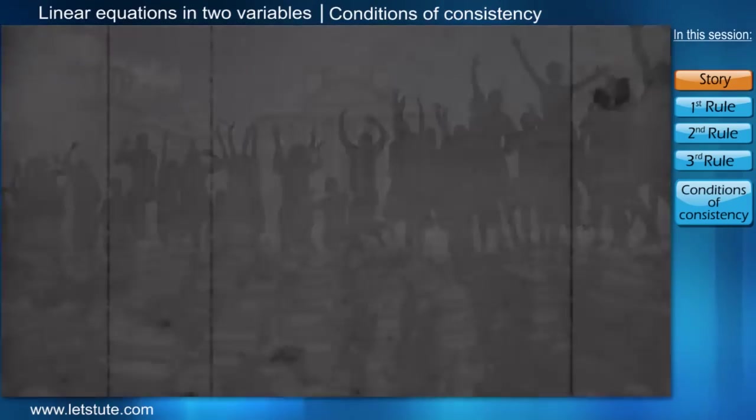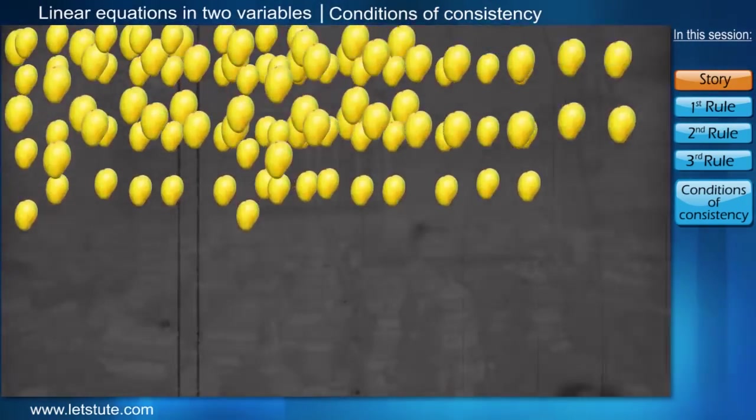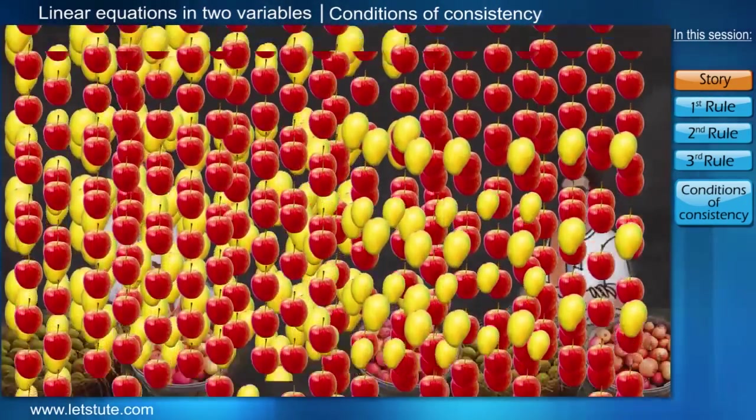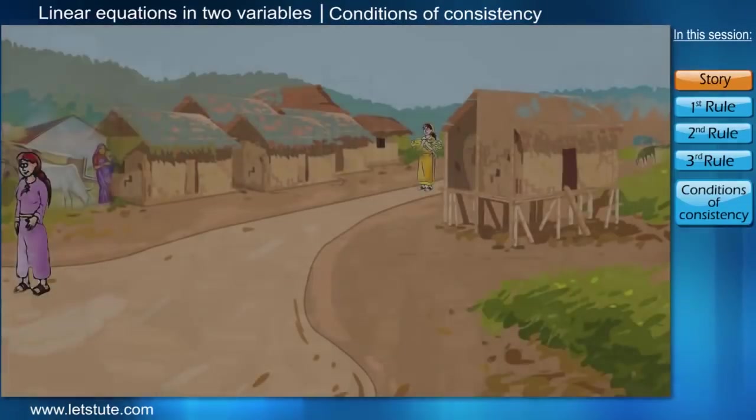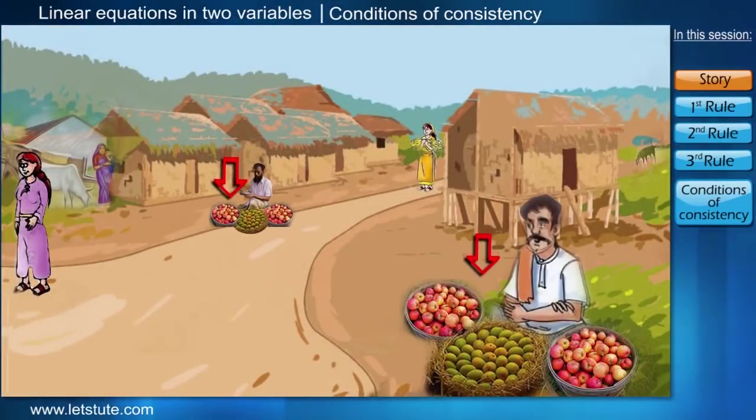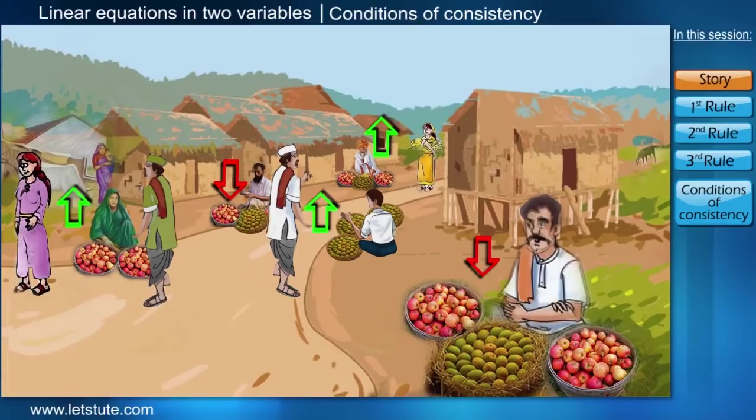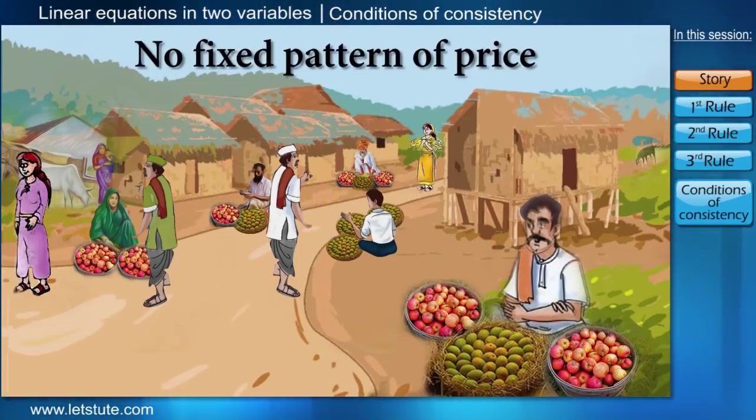In a particular year, there was abundance in the production of mangoes and apples, which led to chaos among the people for selling and buying the fruits. Some people were selling them at a lower price at some places and some others at a higher price. Injustice was happening as there was no fixed pattern of the price.